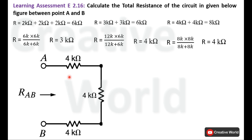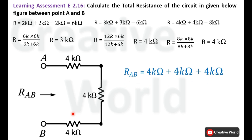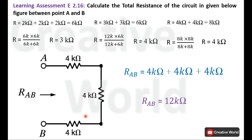Now these three 4 Kilo Ohm resistances are connected in series. We can find their equivalent resistance RAB by adding them together. RAB = 4K + 4K + 4K = 12 Kilo Ohm. This is our final answer: the value of RAB is equal to 12 Kilo Ohm.